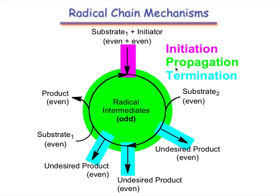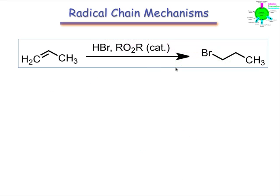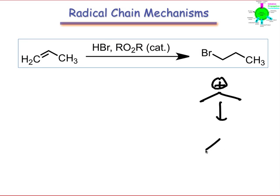Let's take a look at a specific example of a radical chain mechanism: peroxide-promoted hydrobromination of an alkene. We would expect, if a carbocation were involved in the mechanism, that the bromine would end up at the secondary rather than the primary position. However, when a small amount of a radical initiator is used in conjunction with HBr, the opposite selectivity is observed. The bromine ends up exclusively on the primary position.